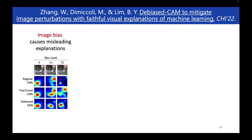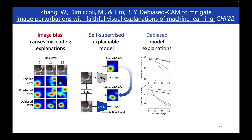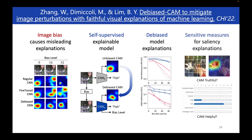To sum up, we identified that contextual bias in images may cause misleading explanations. We provided a self-supervised approach to achieve debiased explanations. And we designed sensitive measures for saliency map explanations and found various advantages. Please check our paper for more details. Thanks for listening, and I'm glad to take questions.